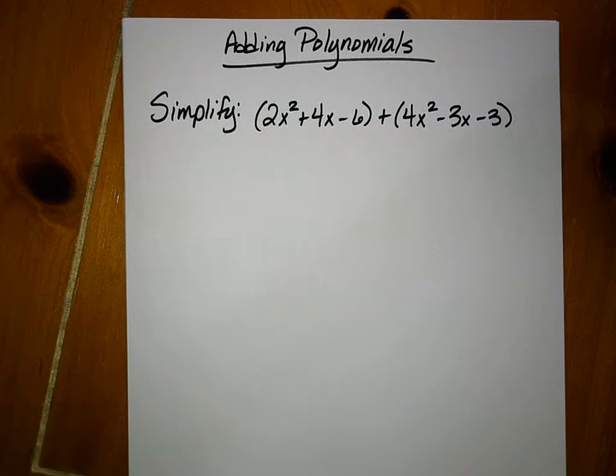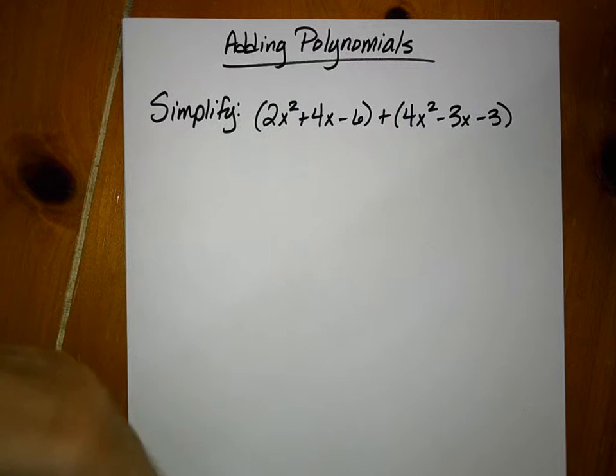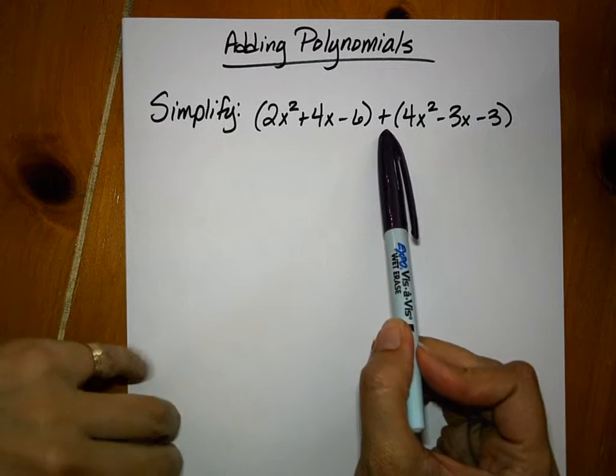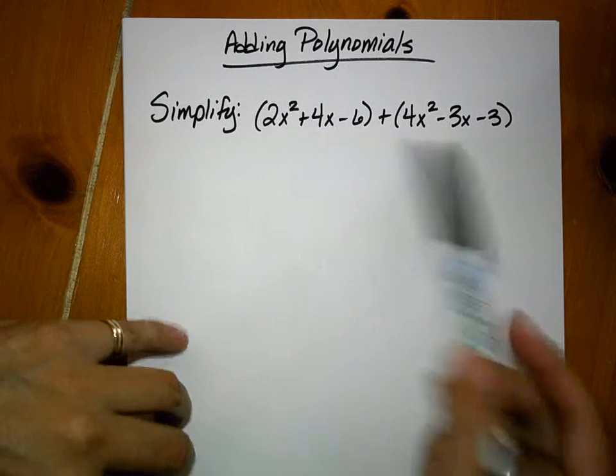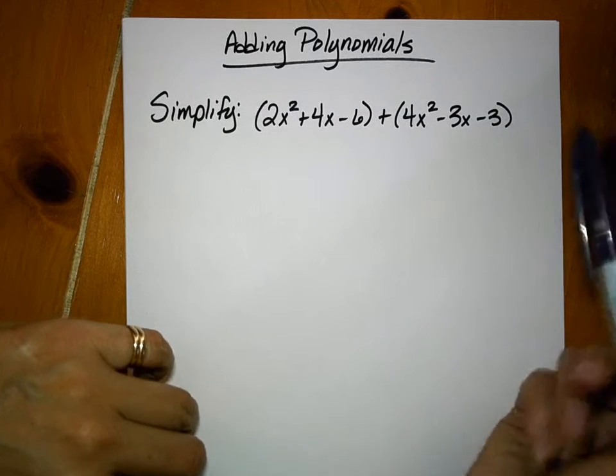Okay, two methods for adding polynomials. The first one is going to be similar to my video on combining like terms, which is because this is addition, these two polynomials are being added to each other, and you don't have to worry about any double negatives and changing your signs.